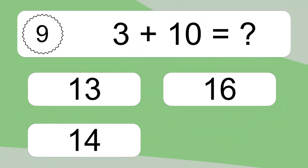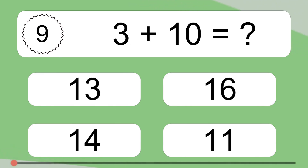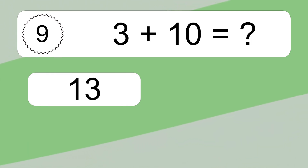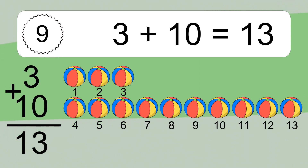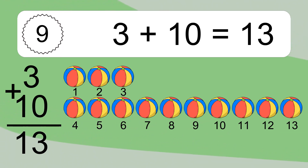3 plus 10 equals what? 3 plus 10 equals 13. Let's count it. 1, 2, 3, 4, 5, 6, 7, 8, 9, 10, 11, 12, 13.